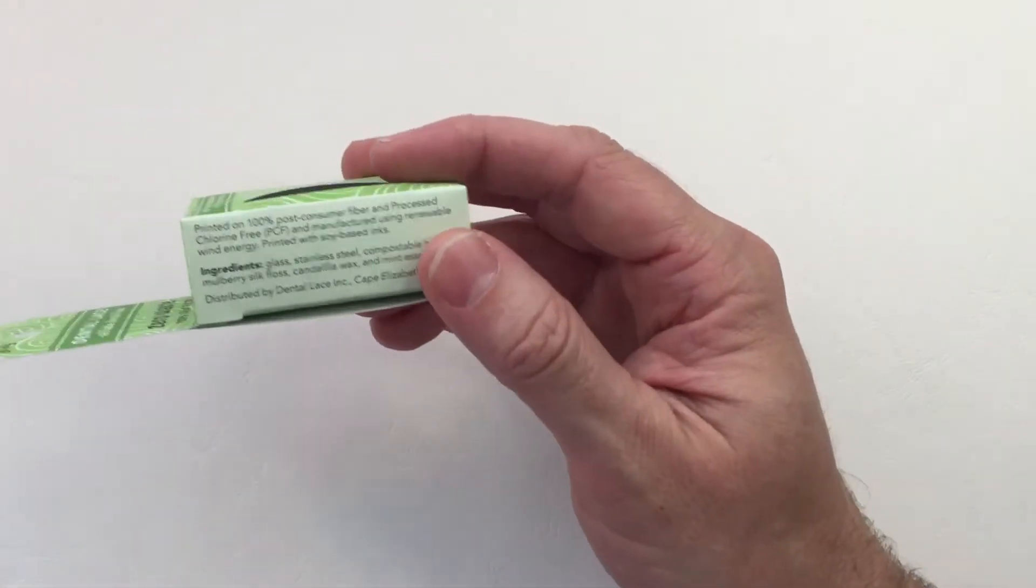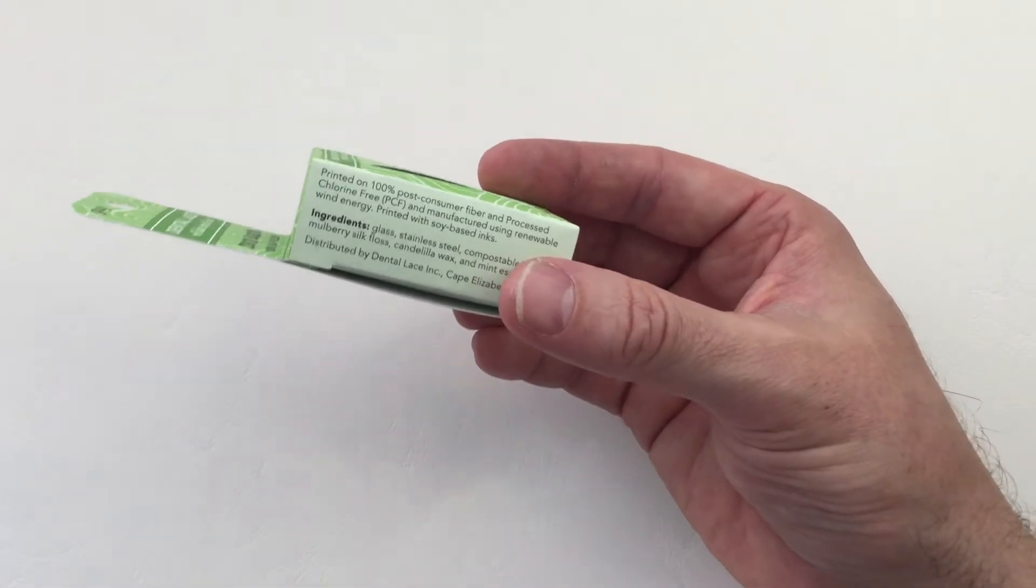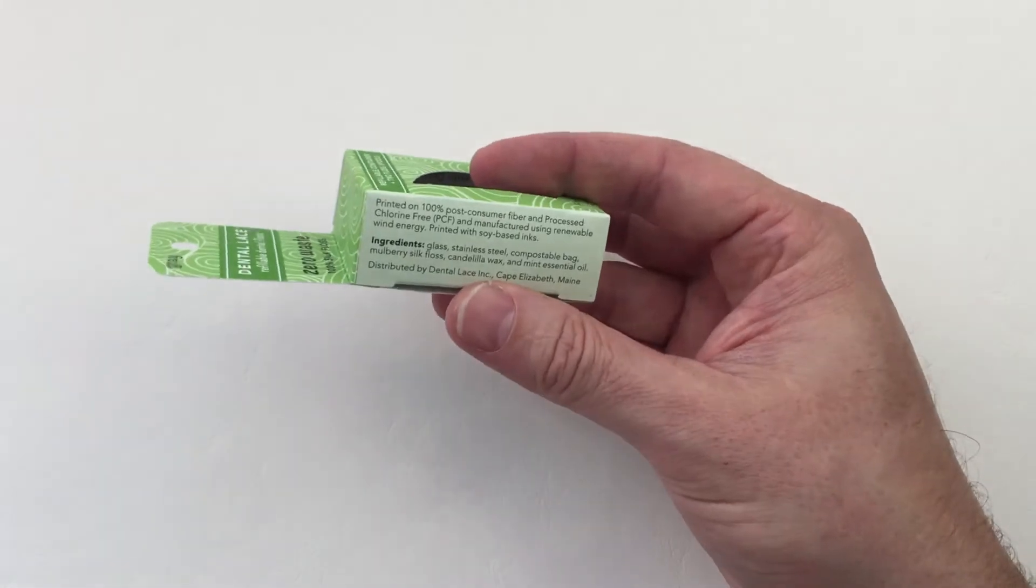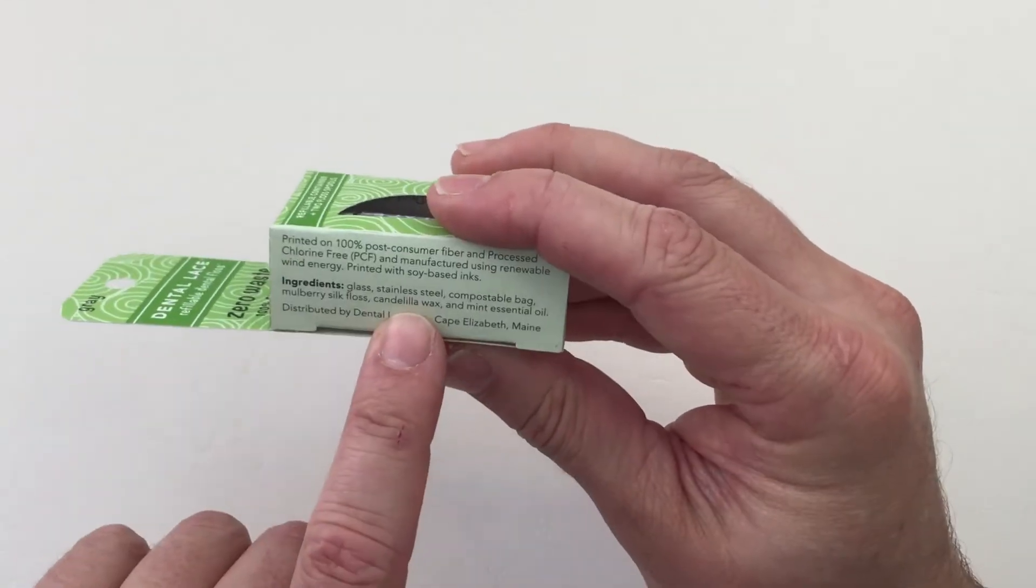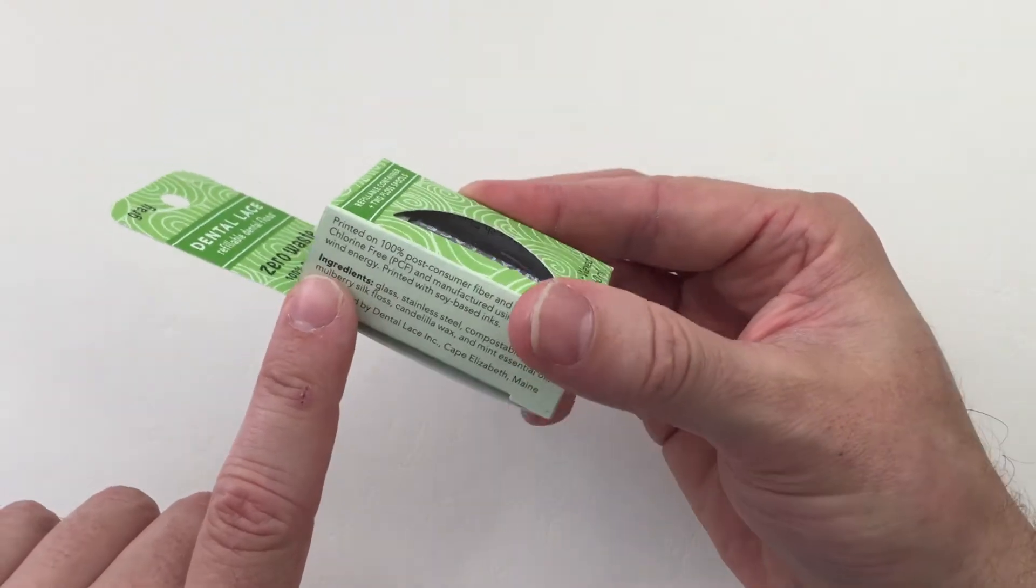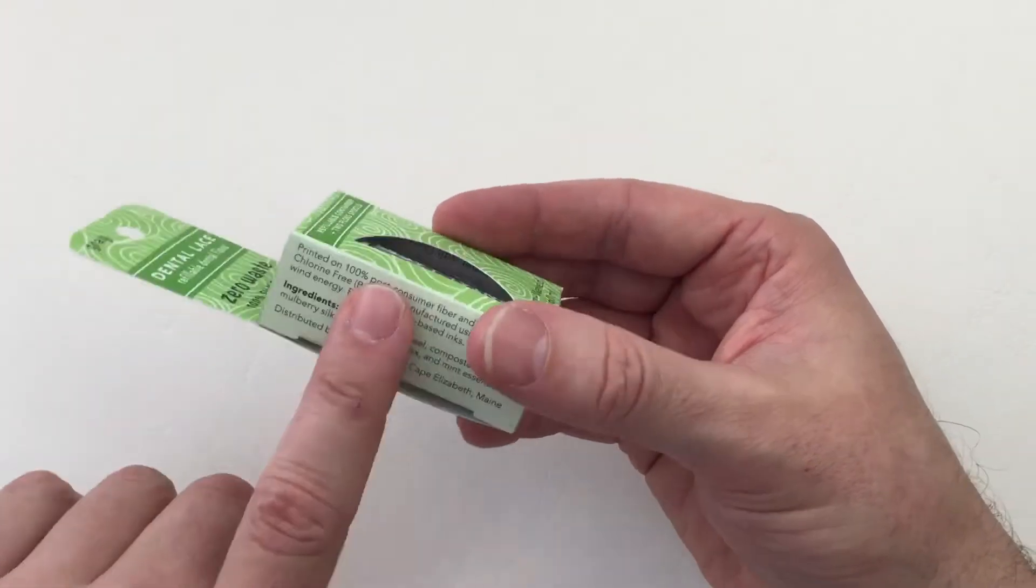Looking at the pack, it's printed with soy-based inks, which is great. It's manufactured using renewable wind energy. There are seven ingredients in this floss, so that's great. It's really eco-friendly, sustainable, and basically biodegradable.